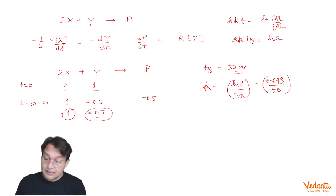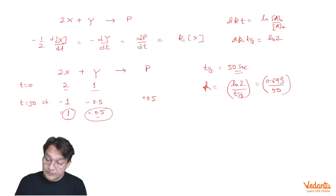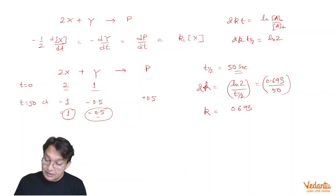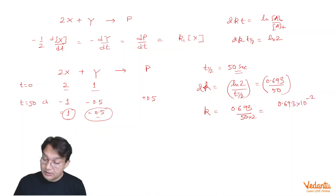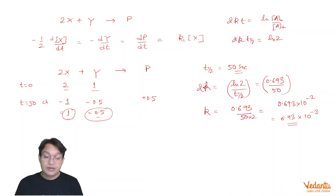In this particular case, the rate constant given means t½ = ln2 / 2k. So if we want to find k, then 2k = ln2 / t½, and therefore k = 0.693 / (50 × 2), which equals 0.693 × 10⁻² / 2 = 6.93 × 10⁻³. That should be the rate constant.